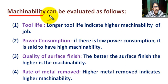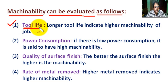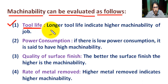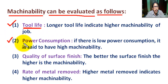Machinability can be evaluated as follows. Number one: tool life — longer tool life indicates higher machinability. The material which gives more life to the cutting tool is said to have higher machinability compared to a material which gives less tool life. Number two: power consumption — if there is low power consumption, it is said to have high machinability.